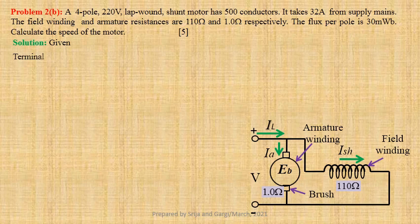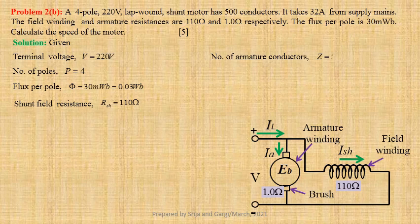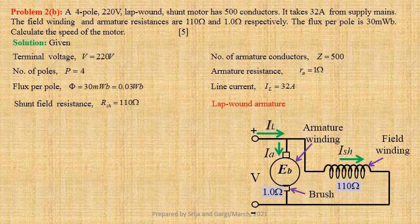Given: Terminal voltage V equals 220 volts. Number of poles P equals 4. Useful flux per pole equals 30 milliweber, that is 0.03 weber. Shunt field resistance RSH equals 110 Ohm. Armature conductors Z equals 500. Armature resistance RA equals 1 Ohm. Line current IL equals 32 Ampere. For a lap-connected armature, number of parallel paths A equals P, that is equal to 4 for this machine.